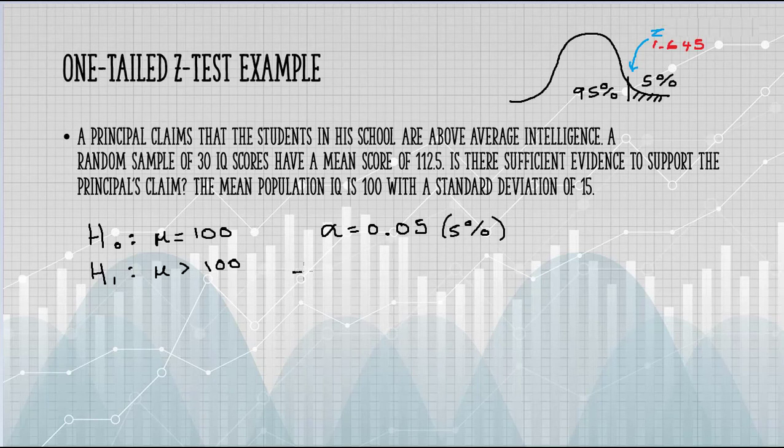The Z score formula is x̄, that's the sample mean, minus μ₀, that's the population mean, all over σ, the standard deviation, divided by the square root of n, which is our sample size.